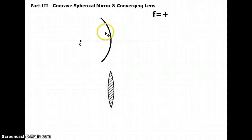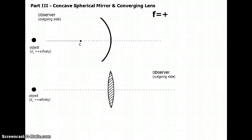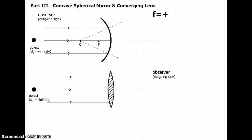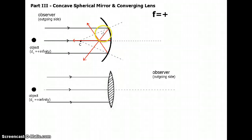Let's see how these treat objects that are very, very far away — light comes in parallel. On the mirror, I've dropped in the normals that emanate from the center of curvature, with the focal length there. Light reflects off at equal angles to the normal. Coming in at zero degrees to the normal, it bounces right back on itself through the middle. Notice all the light beams converge at a single point before they spread out again. That point is called the focus.